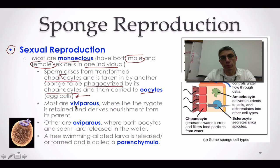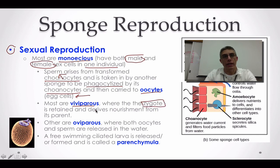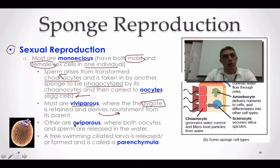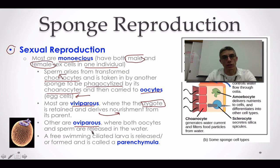Some sponges are going to be considered viviparous, meaning that once the egg cell has been fertilized — producing a zygote, which is a fertilized egg — that egg is going to be retained or kept inside the sponge itself, deriving nourishment from the sponge. Sometimes eggs and sperm are actually released into the environment, and fertilization takes place outside of the sponge. In this case, we're talking about a condition called oviparous, which means both the egg cell and sperm are released and fertilization occurs on the outside.